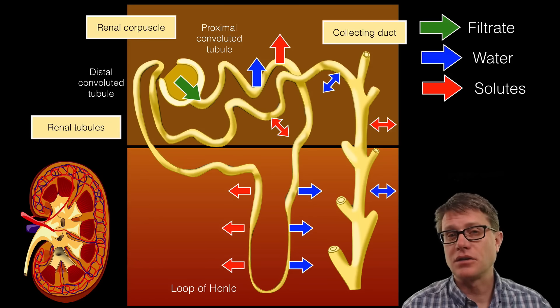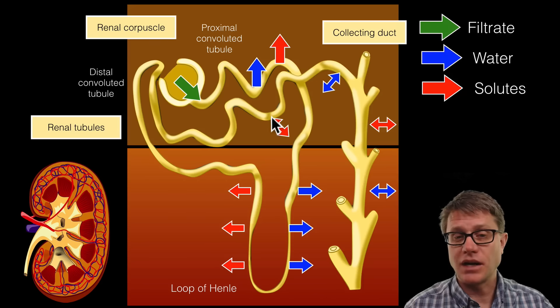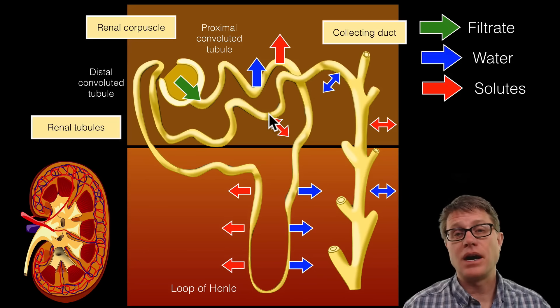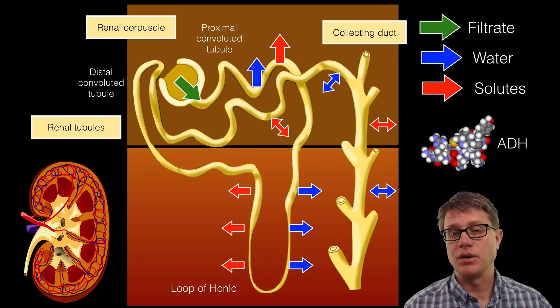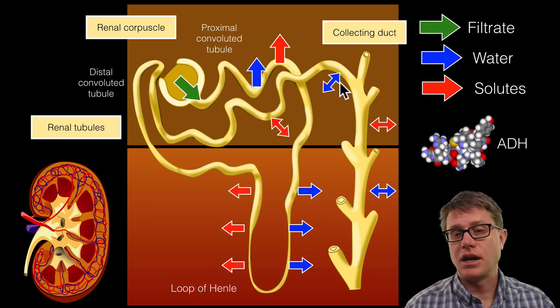What's going on in the distal convoluted tubule and collecting duct is variable secretion and reabsorption of solutes and water. In other words, sometimes we're getting rid of waste and sometimes we're taking that back into the body. A lot of this is under hormone control. For example, a really important hormone is vasopressin or ADH, antidiuretic hormone, which affects the distal convoluted tubule and the collecting duct.